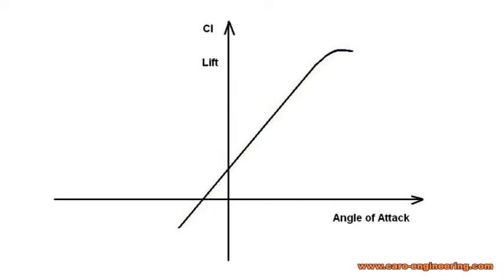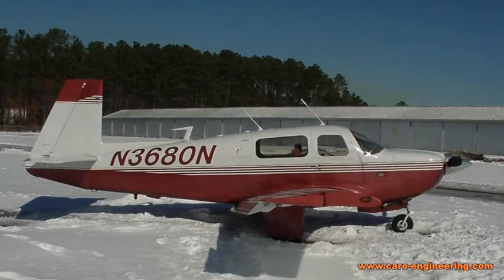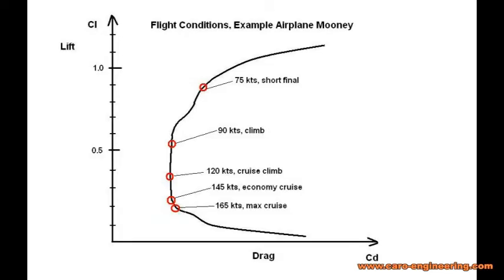Coefficients are used so that we don't have to deal with speed and wing areas, which would make comparisons more complicated. If we add the dimensions back in, you could plot the speed along this polar, as I have done for this example airplane, a Mooney. Ideally, the airfoil stays in its lowest drag range — the drag bucket — during all phases of flight.